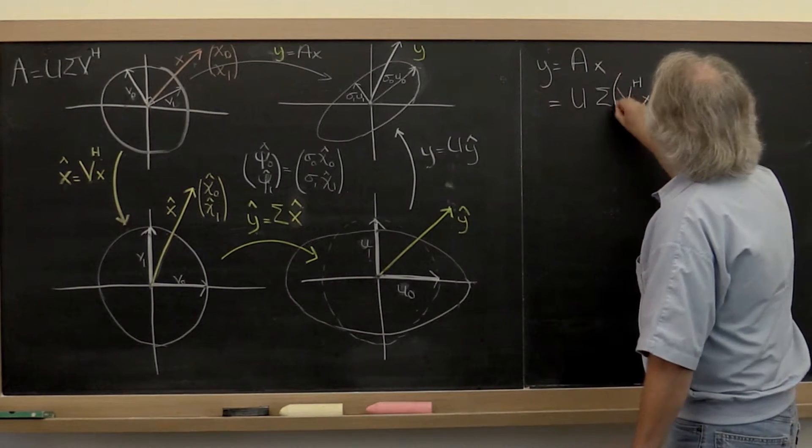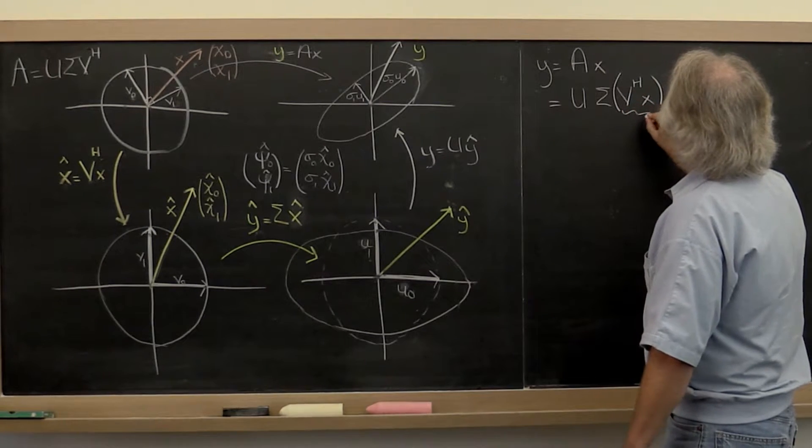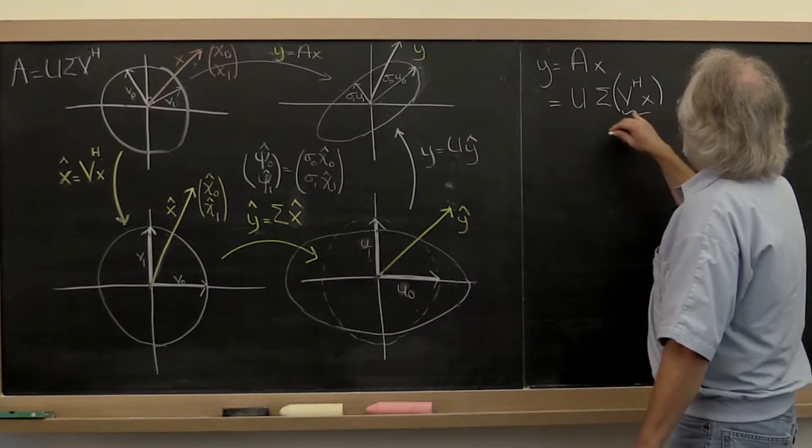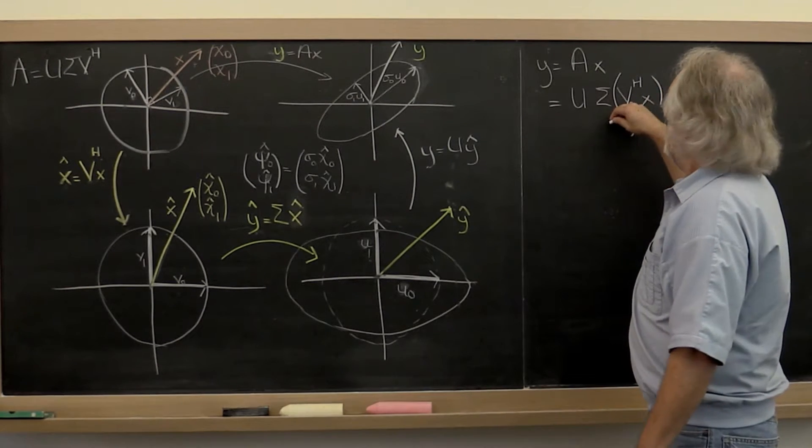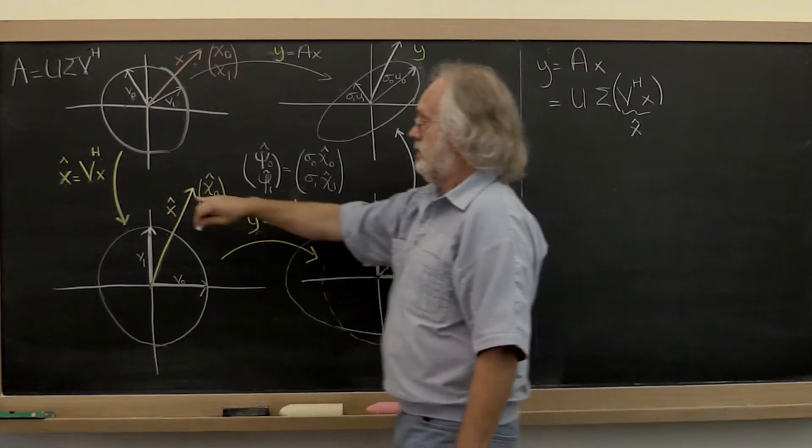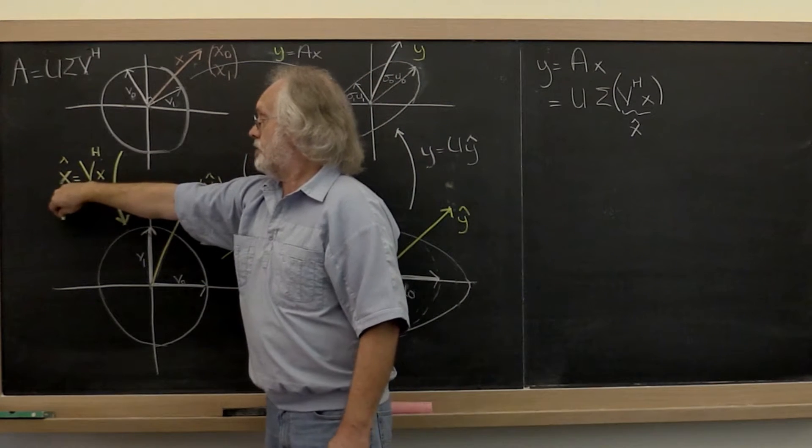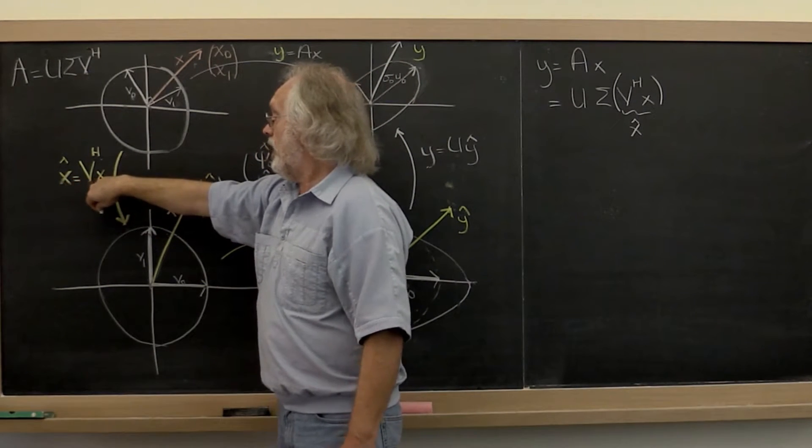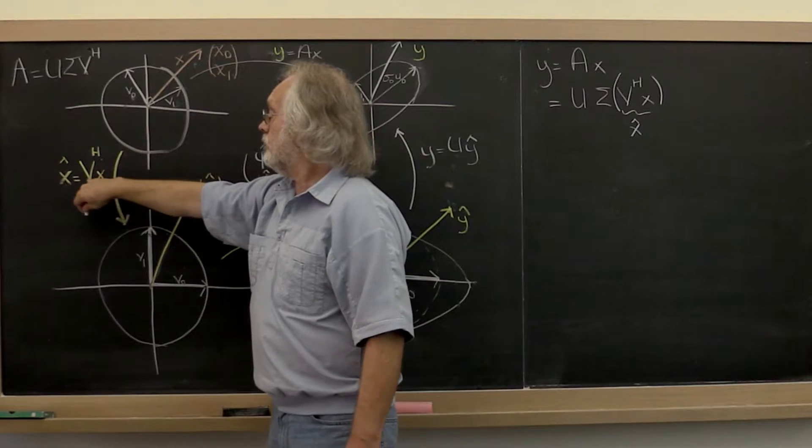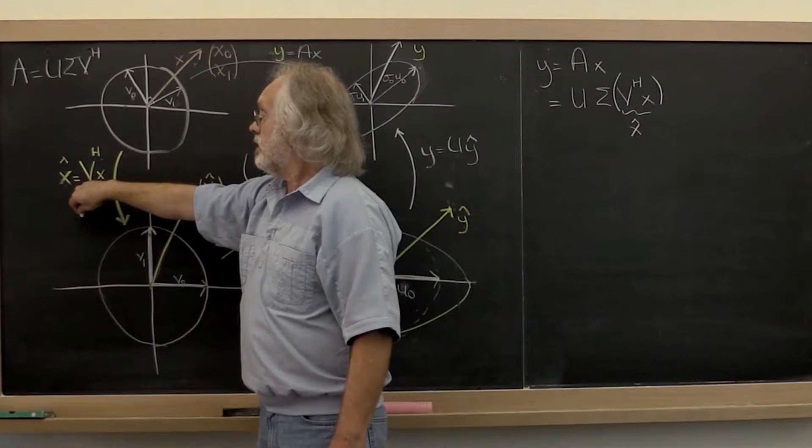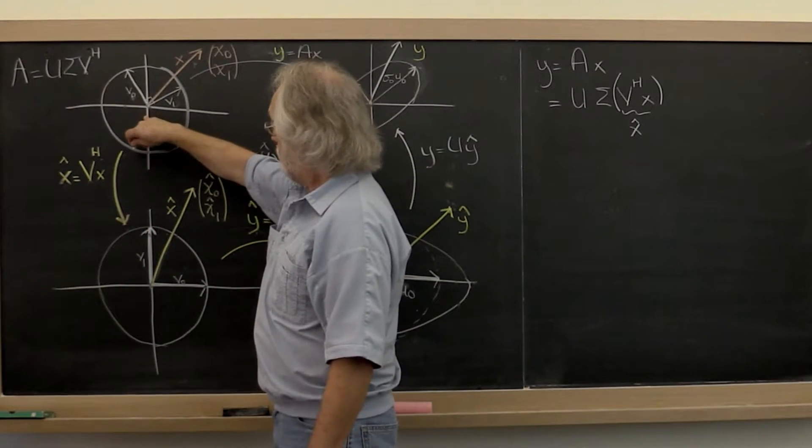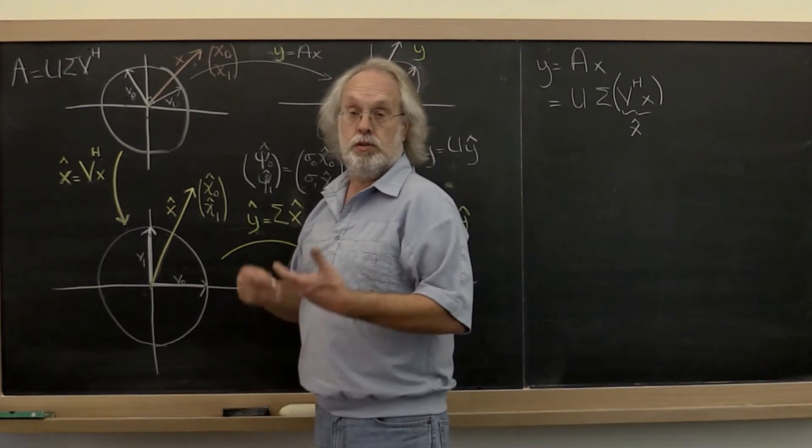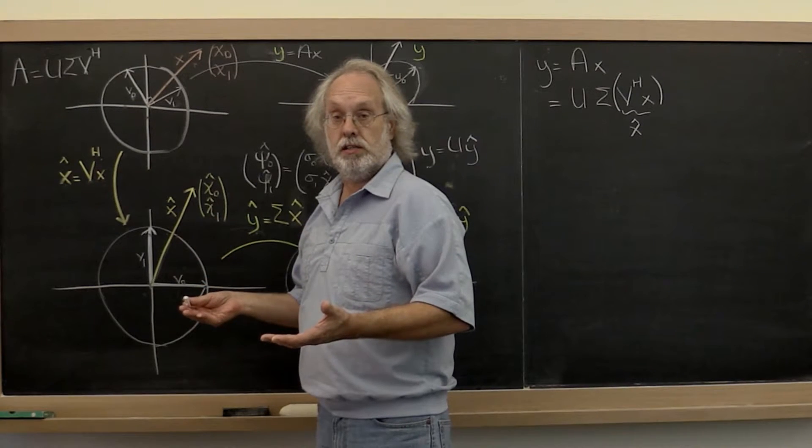And we can first look at this and say that we saw is a change of orthonormal basis. This really just gives us the coefficients when we view x in terms of the orthonormal basis that is given by the columns of matrix V. So we go from here to here where all we do is do a change of orthonormal basis.